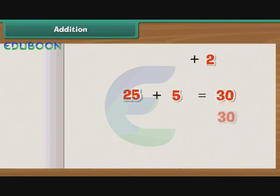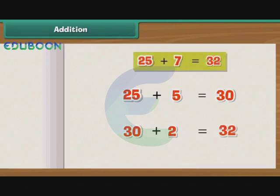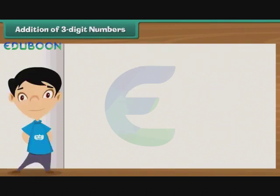Then we are left with two numbers, 30 and 2, to add. The result is 32. Thus, the sum of 25 and 7 can be quickly calculated as 32. Addition of three-digit numbers.